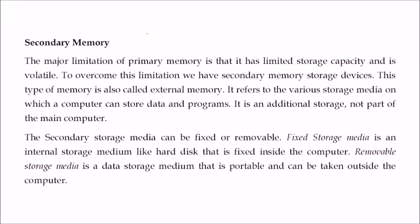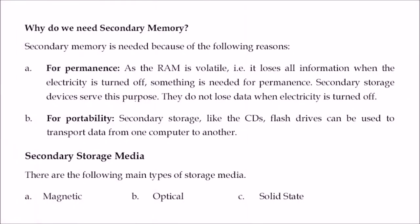Secondary memory has gained importance because primary memory loses data when power is off, and it is also limited and expensive — a maximum of 4 GB or 8 GB. Secondary memory allows dealing with terabytes of data that remains intact when power goes off. This additional storage is called secondary memory. It can be fixed, like a disk inside a cabinet, or removable, like pen drives and data drives.